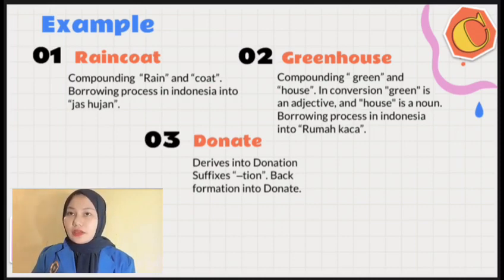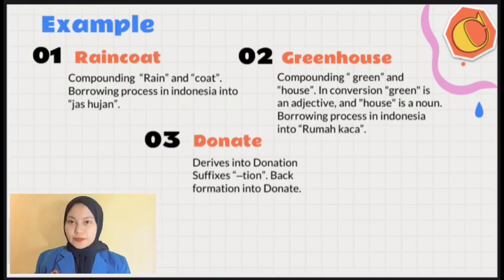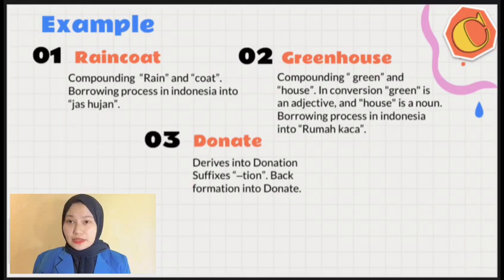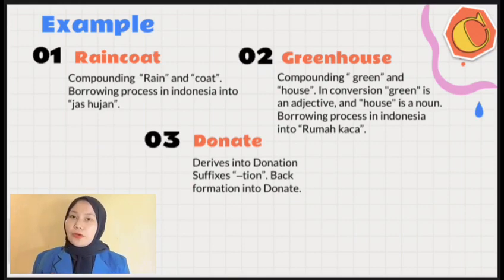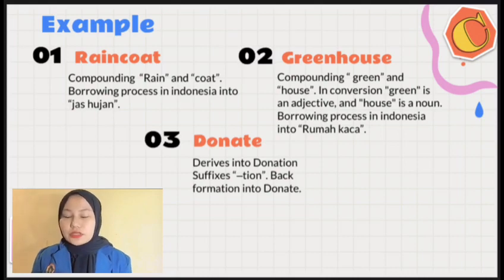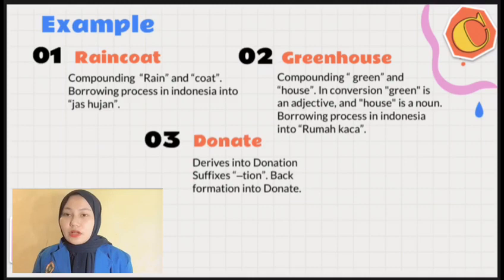Coat functions as the head or main element of the compound. The next example is greenhouse — compounding green and house. In conversion, green is an adjective and house is a noun. Borrowing process in Indonesian into rumah kaca. Conversion is a word formation process in which a word changes its grammatical category.